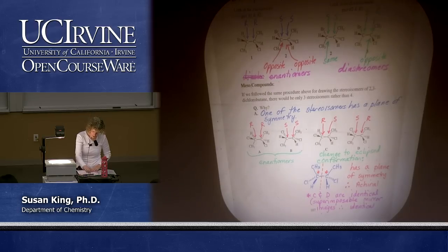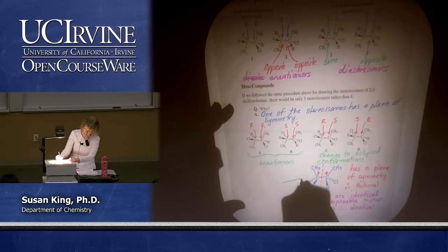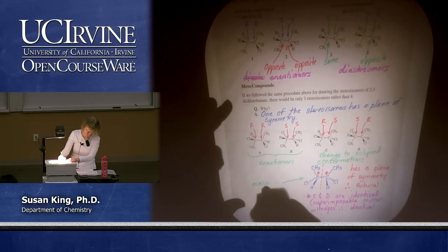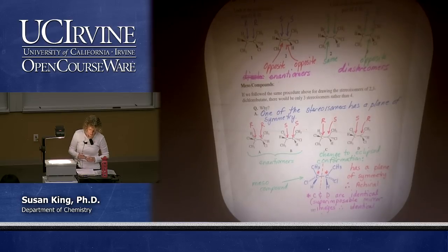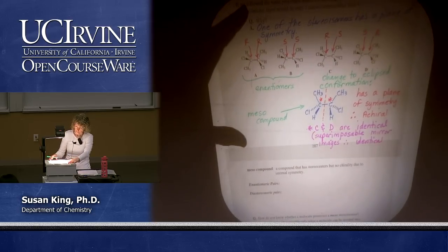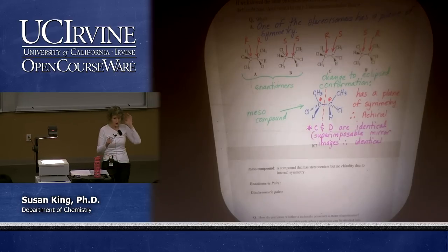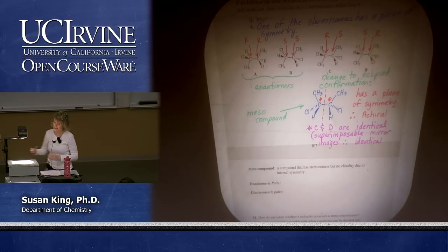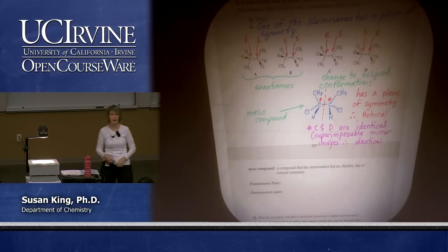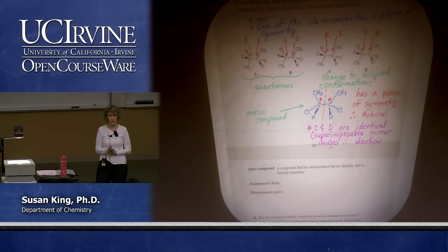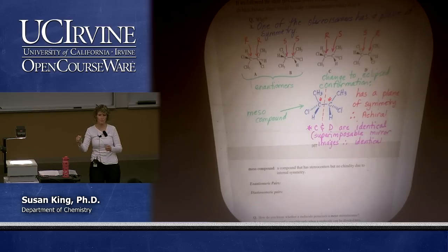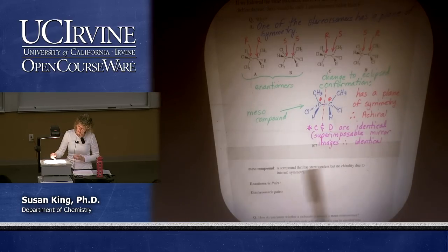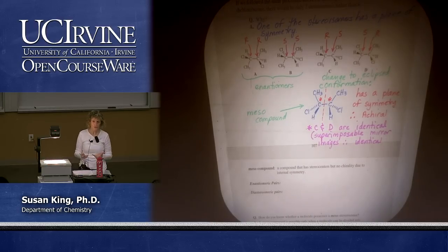We have a special name for this type of compound — we call it a meso compound. The definition is: a compound that has stereocenters but no chirality due to internal symmetry. Meso is not a relationship between two molecules. If asked what is the relationship between C and D you would write identical — not meso. You would write identical because each one is meso individually: C is meso, D is meso. But the relationship between the two is that they're identical. It's like the word chiral — it's a feature of that molecule, not a relationship between two molecules.